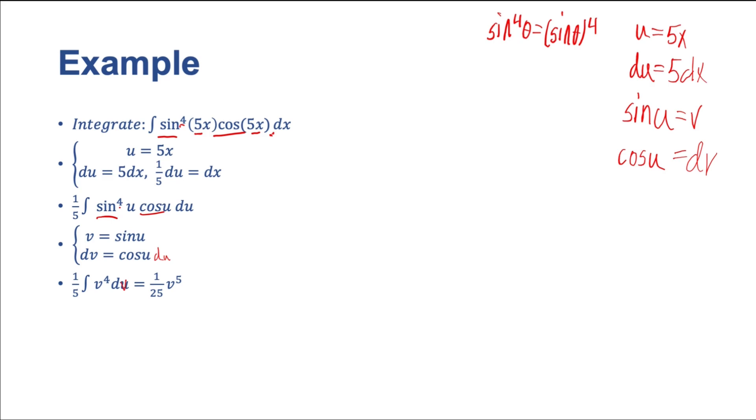And we can rewrite that as 1/25 v^5. That's the reverse power rule. Pretty easy stuff that we're doing there. So now that we've finished with our integrand, now we have a value. Now we just need to do a lot of back substitutions.